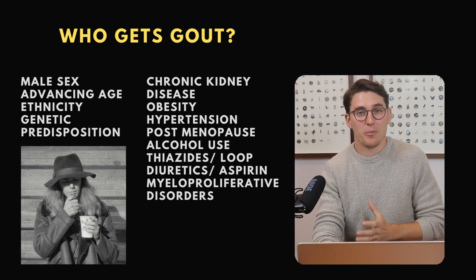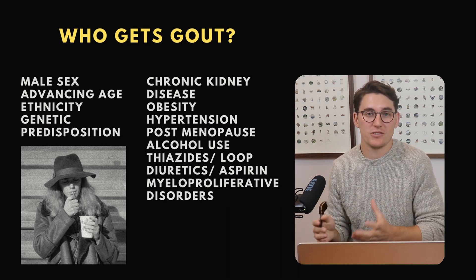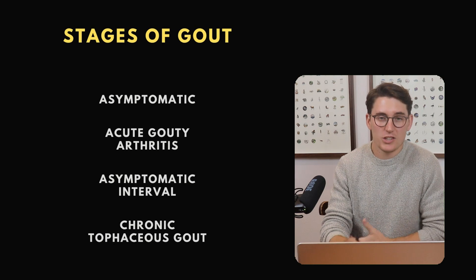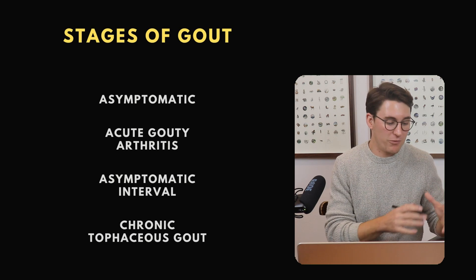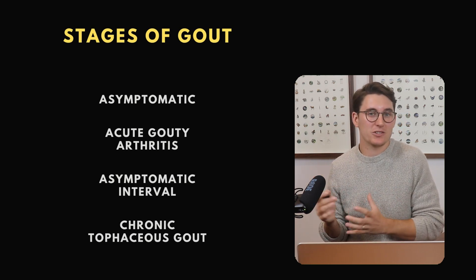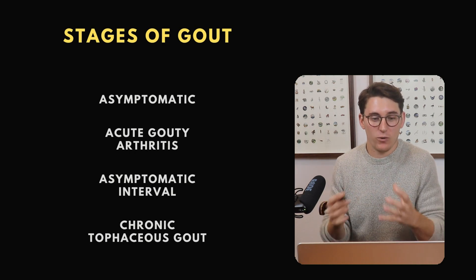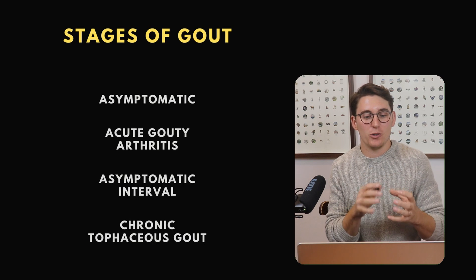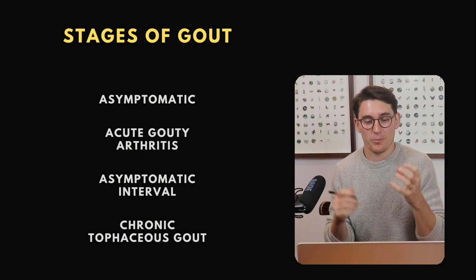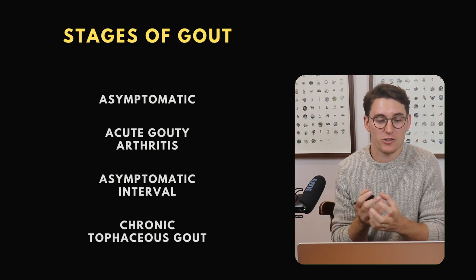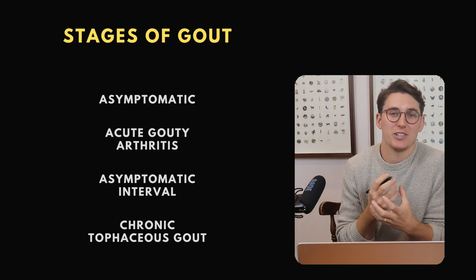Interestingly, patients who smoke or drink coffee regularly actually tend to have lower levels of gout than those who don't. Gout follows a predictable course: there is a prolonged asymptomatic period of five to ten years where urate is elevated but there are no clinical features, and then all of a sudden someone will develop acute gouty arthritis — a swollen, red, painful joint where the body has developed an inflammatory response to those monosodium urate crystals. This is the second stage of gout.